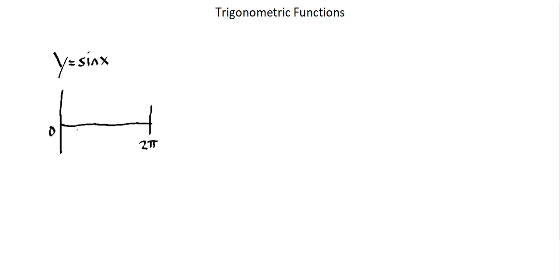For sine, at 0 the sine value is 0, and when we complete the revolution we end up at 2π, which also has a sine value of 0. Halfway through we are at π, and halfway before there is π over 2, and then between π and 2π is 3π over 2. At these five critical points, the curve for y equals sine x reaches 1 at π over 2, goes back to 0 at π, negative 1 at 3π over 2, and back to 0 at 2π.